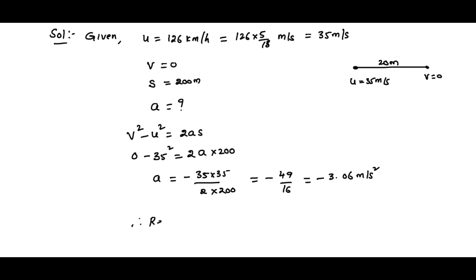Here acceleration is minus 3.06 meters per second squared. So retardation is equal to negative of acceleration, so minus of minus 3.06. This will be 3.06 meters per second squared. So this is the first part: retardation.